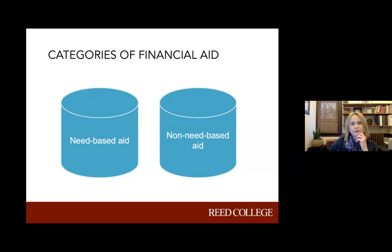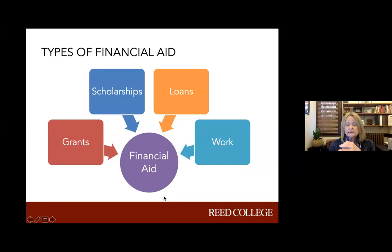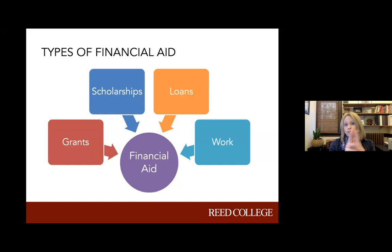The types of aid that you might see: grants and scholarships are considered gift aid - money that you don't need to repay. Loans and student work are still considered sources of financial aid, but student work you need to work and earn the funding in order to receive it. A loan is funding that you would borrow and need to repay. All of those components could come together to form your financial aid eligibility at a particular college.